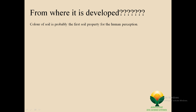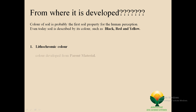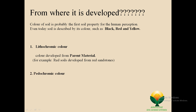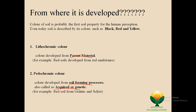The color of soil is probably the first soil property for human perception. Even today, soil is described by its color such as black, red, and yellow. In soil color, we use two terms. The first one is lithochromy color, which is developed from parent material — for example, red soil developed from red sandstone. The second one is pedochromy color, which is developed from soil forming processes and is called acquired or genetic color — for example, red soil from granite.